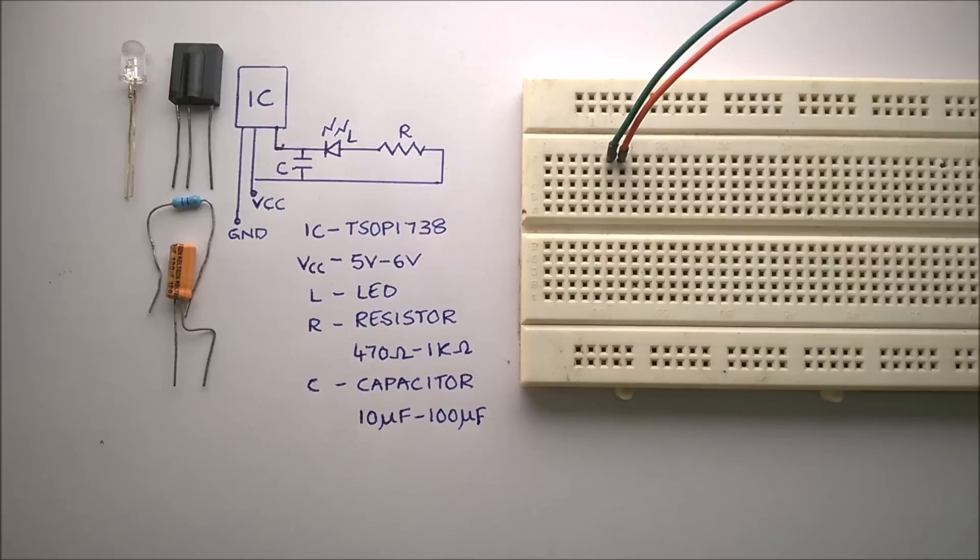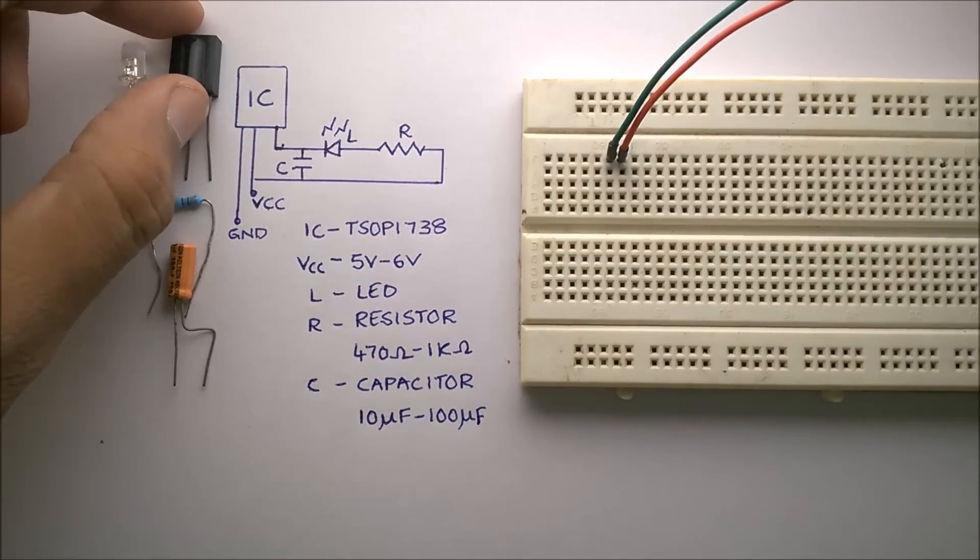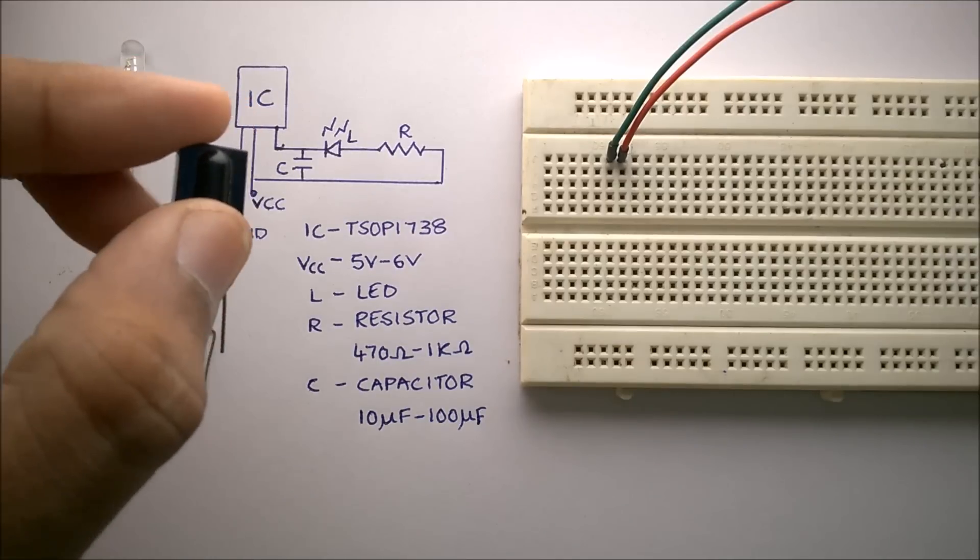In this video I'm going to show you how to make a simple IR remote control tester circuit. For this you need an IC named TSOP 1738.